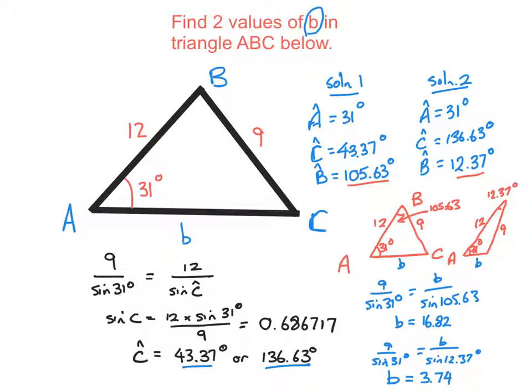So the two answers we've got are B equals 16.82 and B equals 3.74. That is an IB level question.